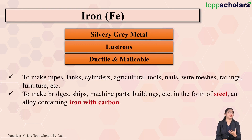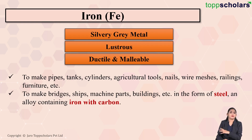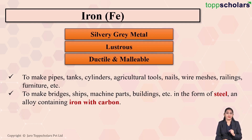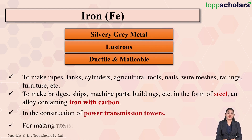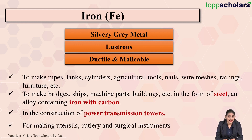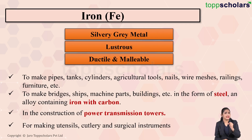Iron is also used for construction purposes — for the construction of bridges, ships, machine parts, and buildings. For these construction purposes, iron is used in the form of steel. Steel is an alloy of iron containing iron with carbon. Iron is also used in the construction of power transmission towers, as well as for making utensils, cutlery, and surgical instruments.